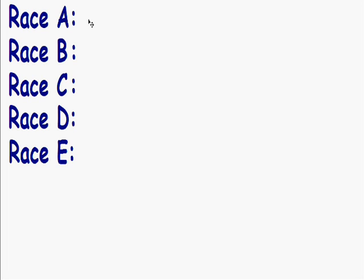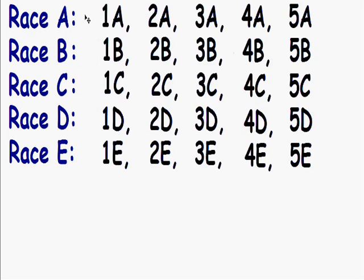So we're starting with 25 sprinters and there's only 5 sprinters allowed per race. The first thing we're going to do is separate them into 5 different races, each having 5 sprinters. I labeled each race using letters — the first race is race A, the second is race B, so on and so forth. I labeled each runner with a number and a letter: the number represents which place they finished, and the letter represents which race they're in. So runner 1A is the first place finisher from race A, runner 2B is the second place finisher from race B, and so on.